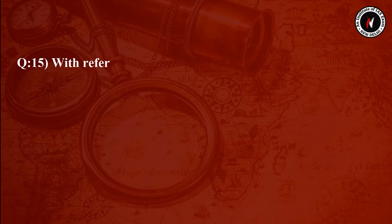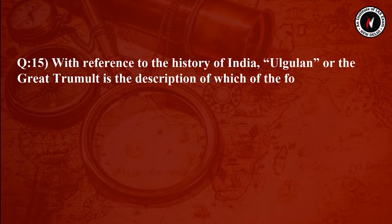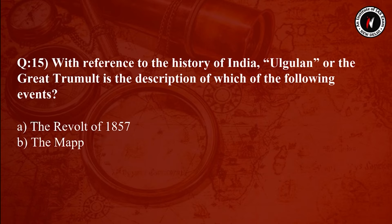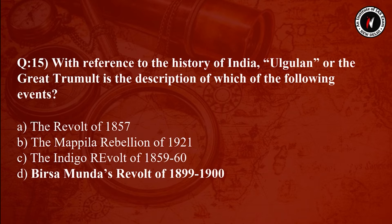Question number 15: With reference to the history of India, 'Ulgulan' or 'The Great Tumult' is the description of which of the following events? Option A: the Revolt of 1857. Option B: the Moplah Rebellion of 1921. Option C: the Indigo Revolt of 1859–1860. Option D: Birsa Munda's revolt of 1899–1900.